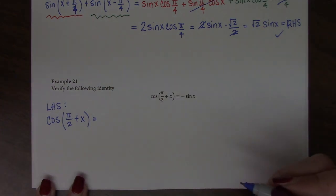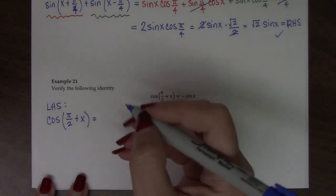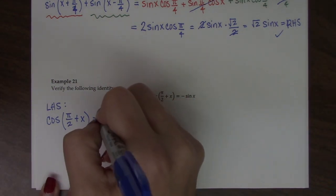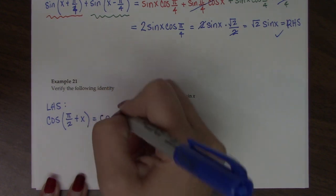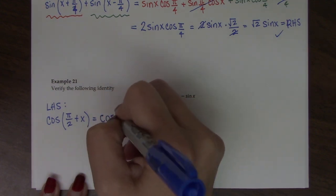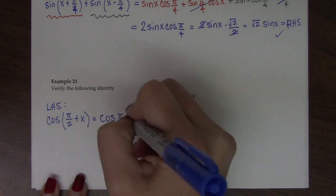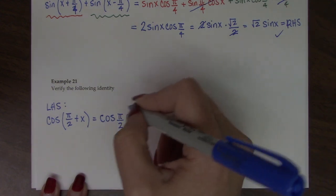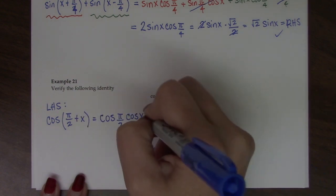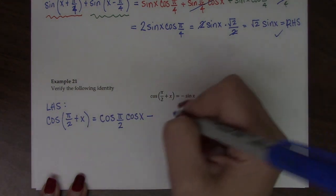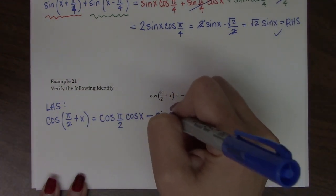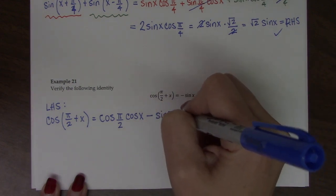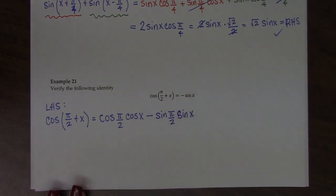And now I'm going to use the cosine sum formula. So the cosine formula says it's cosine of the first thing times cosine of the second thing. And if you're adding on the inside, the identity says you subtract. And now it's sine of the first thing, sine of the second thing.